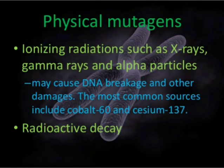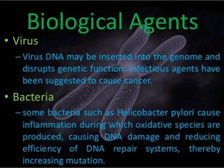Ionizing radiation such as alpha rays, gamma rays, alpha particles, x-rays, etc. are all examples of physical mutagens. So x-ray, gamma ray, and alpha particles all come under physical mutagens. There are also many biological agents that cause mutations, such as viruses and bacteria, which are examples of biological agents that can induce mutations.